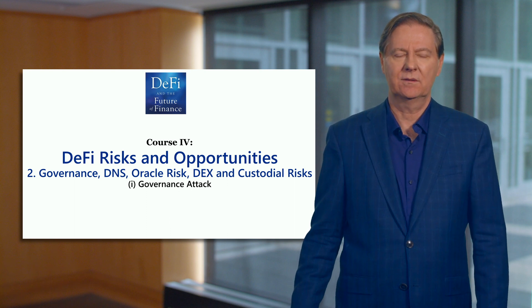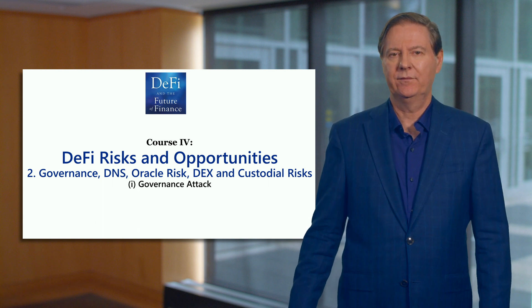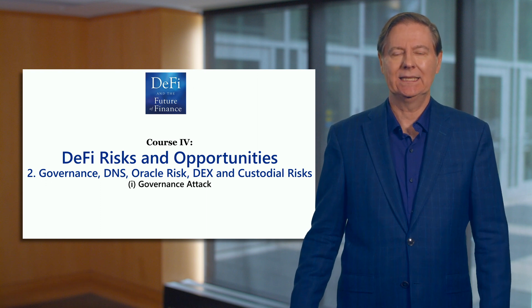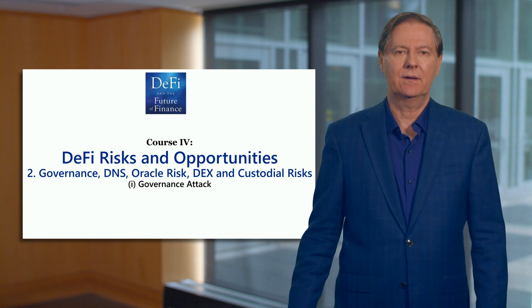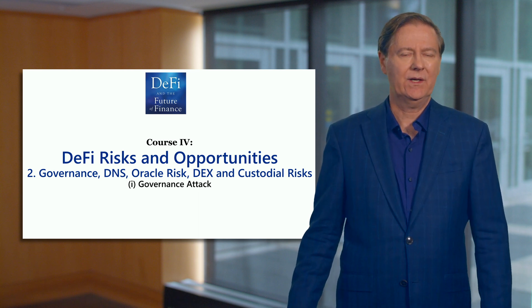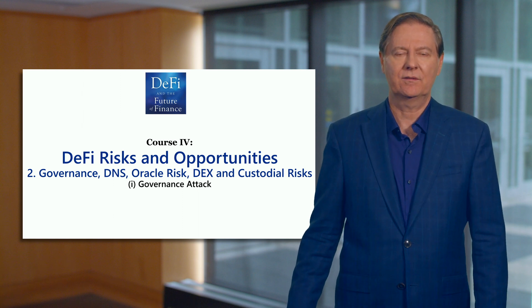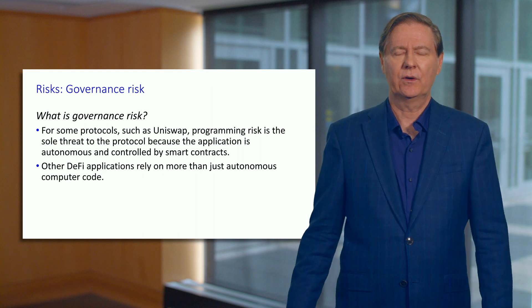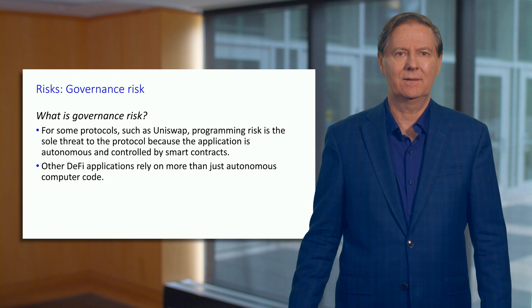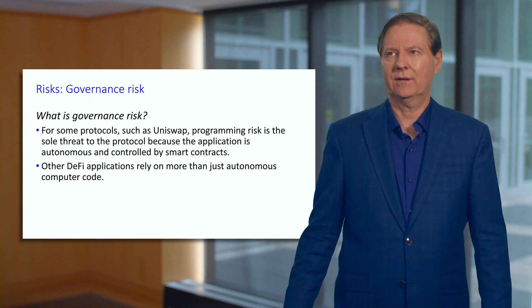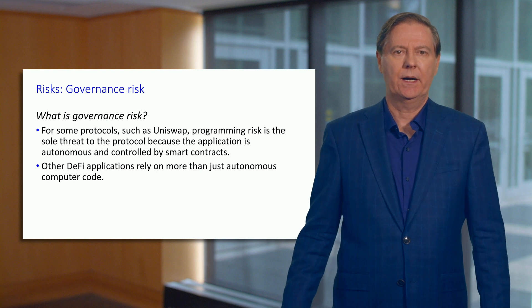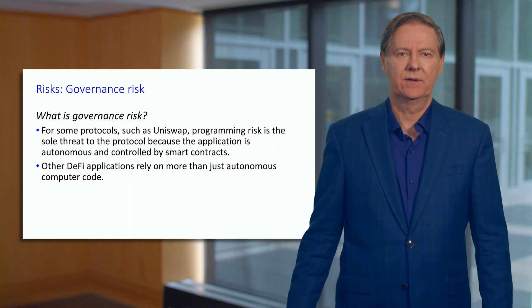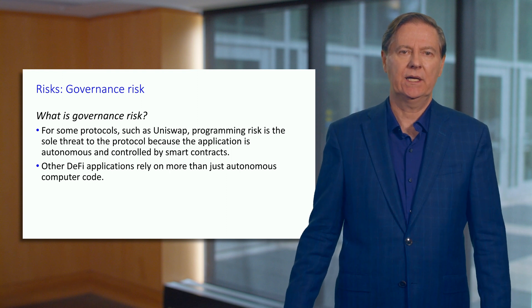I'm going to start with governance risk. I've already highlighted previously an exploit called the rug pull. Let's go through an example of governance risk. What does governance risk mean? It is a situation where the controllers of the protocol could make some changes that are unfavorable.